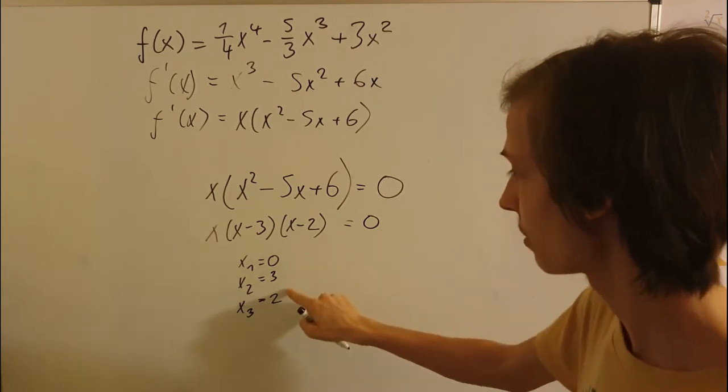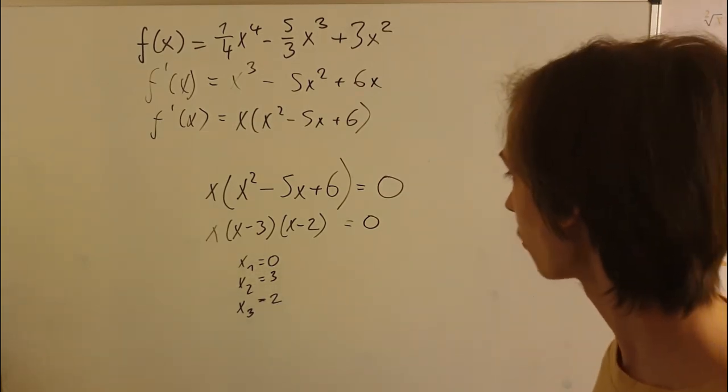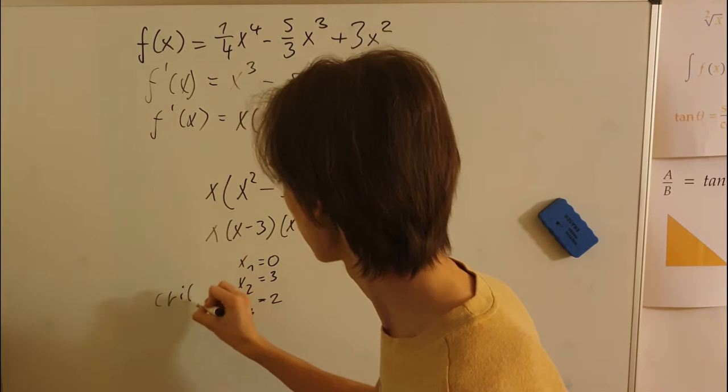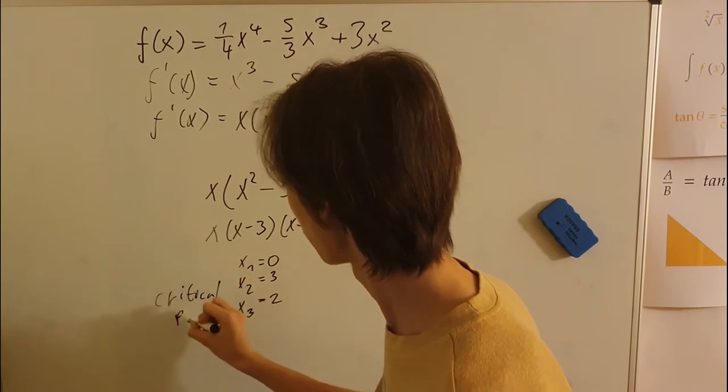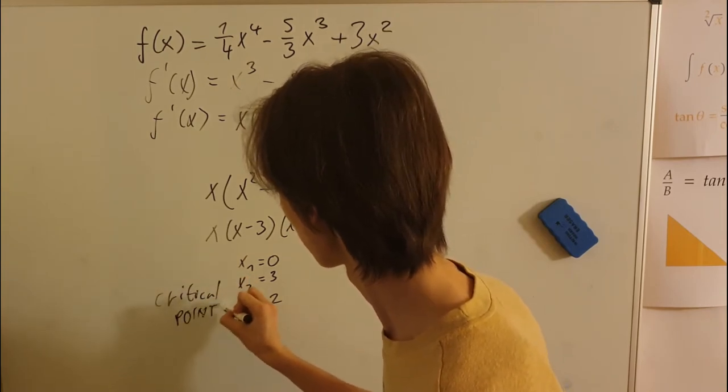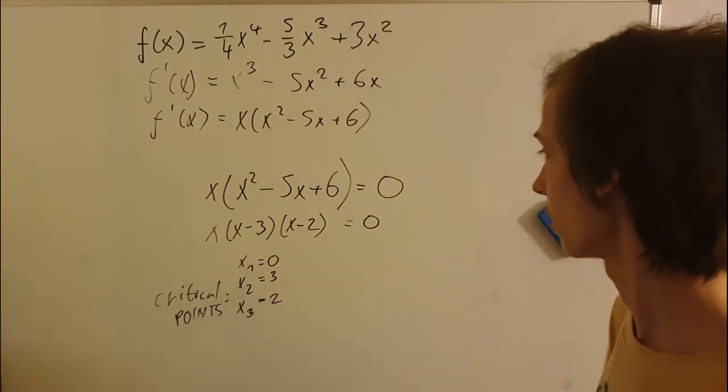At least three points is equal to zero. So we know that critical points are these three, okay?